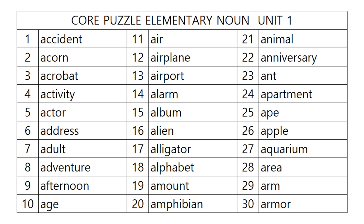21. Animal. Animal. 22. Anniversary. Anniversary. 23. Ant. Ant. 24. Apartment. Apartment. 25. Ape. Ape. 26. Apple. 27. Aquarium. Aquarium. 28. Area. Area. 29. Arm. Arm. 30. Armor. Armor.